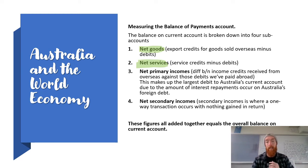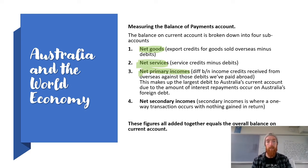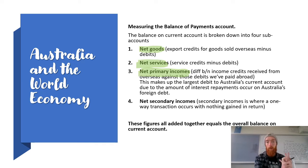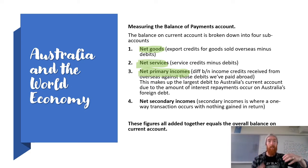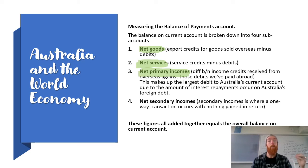Our third sub-account is net primary incomes, which has historically been one of the largest parts of Australia's current account. It is the difference between income credits received from overseas versus debits paid abroad, and includes wages, salaries, interest repayments, and dividends on shares. Interest repayments on foreign debt are a massive reason for significant debits here — Australia has over a trillion dollars of net foreign debt including both public and private debt, which is why net primary incomes is most often in a deficit. This has been minimized recently by historically low interest rates.